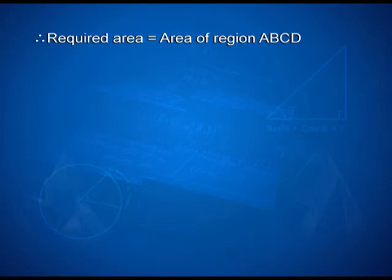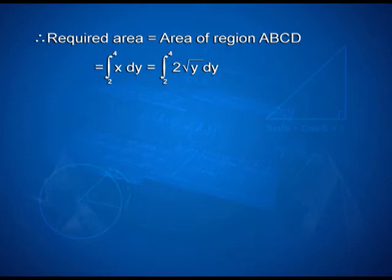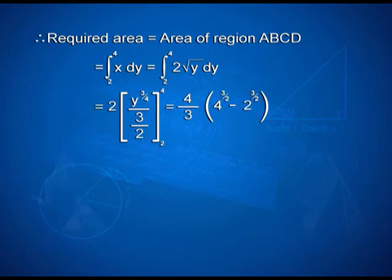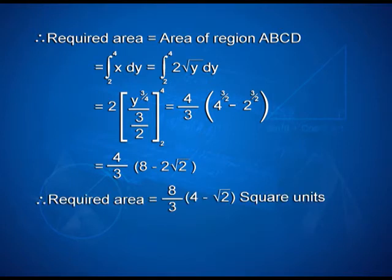Therefore, the required area of region ABCD equals the integral from 2 to 4 of x dy = integral from 2 to 4 of 2√y dy = 2 · [y^(3/2) / (3/2)] from 2 to 4 = (4/3)(4^(3/2) − 2^(3/2)). On simplification, we have (4/3)(8 − 2√2). Taking out 2 as common, the required area is (8/3)(4 − √2) square units.